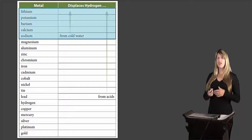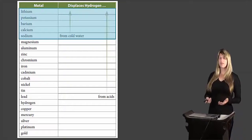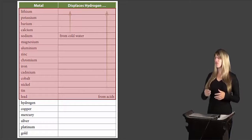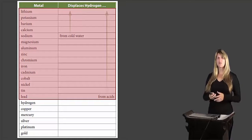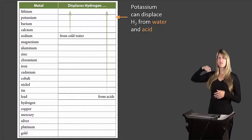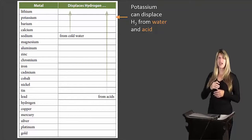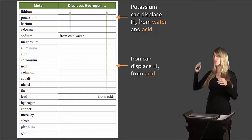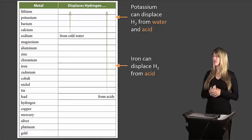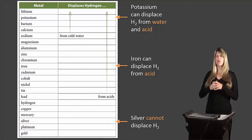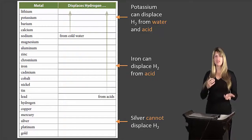The elements at the top of the table can displace hydrogen from water. The next grouping can displace hydrogen from acid. Everything below hydrogen on the table cannot displace hydrogen from either acid or water. For example, potassium can displace hydrogen from both water and acid. Iron can displace hydrogen from acid but not from water. Silver is below both arrows, meaning it cannot displace hydrogen from either acid or water.